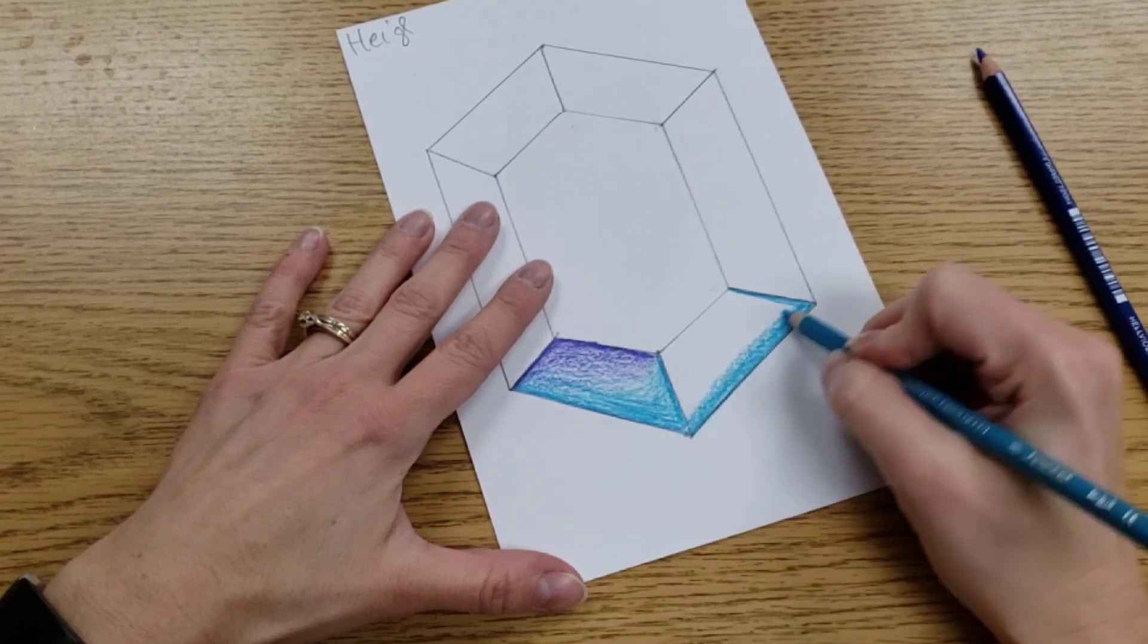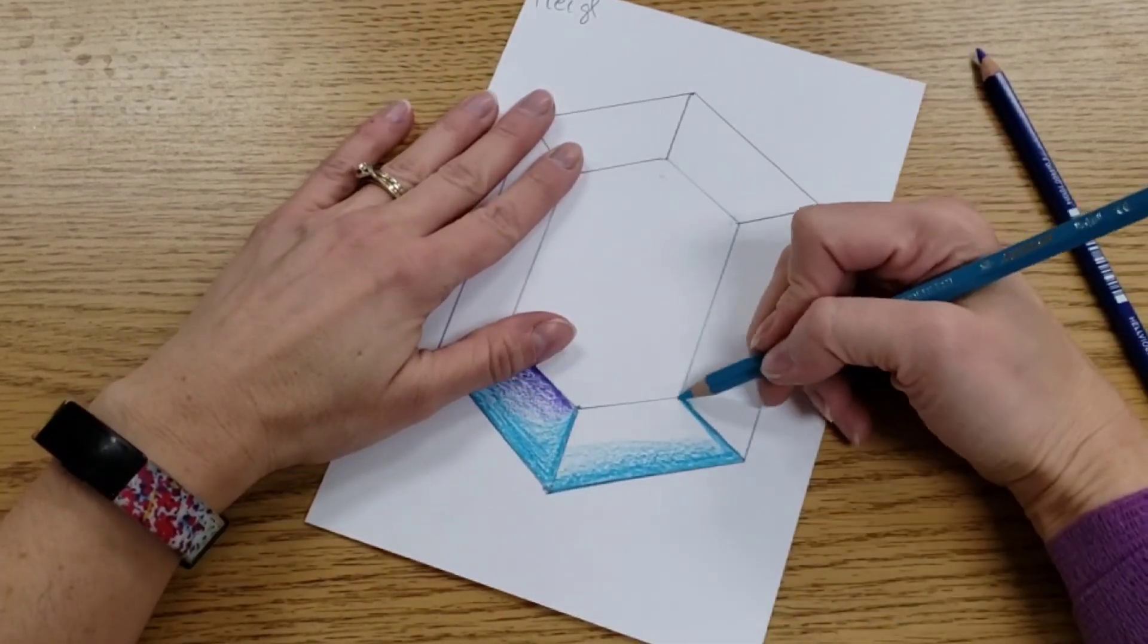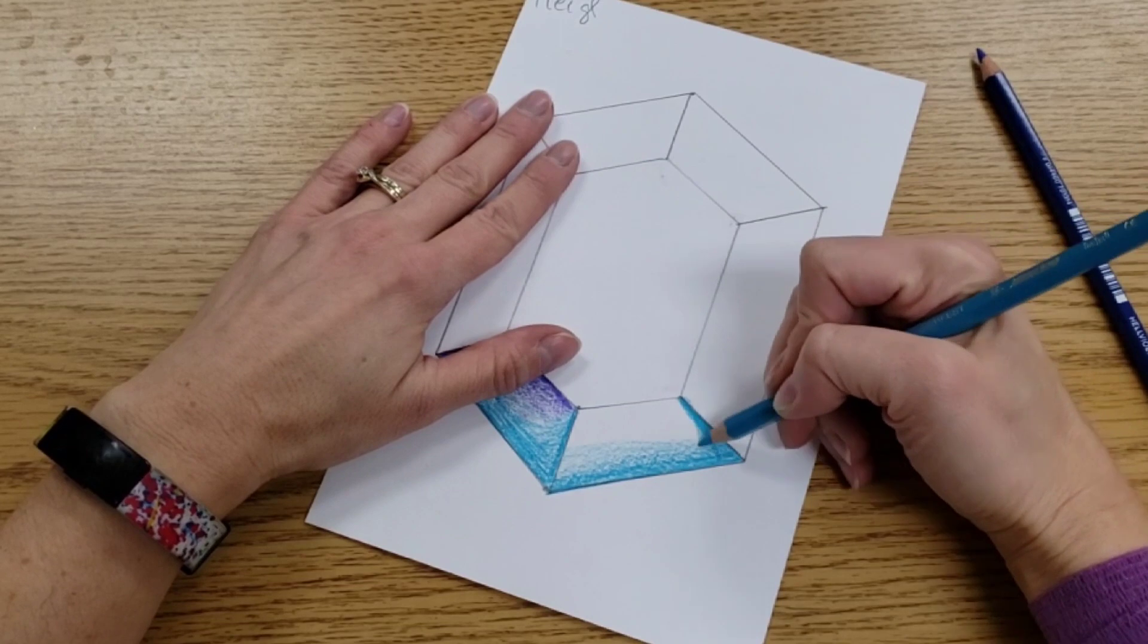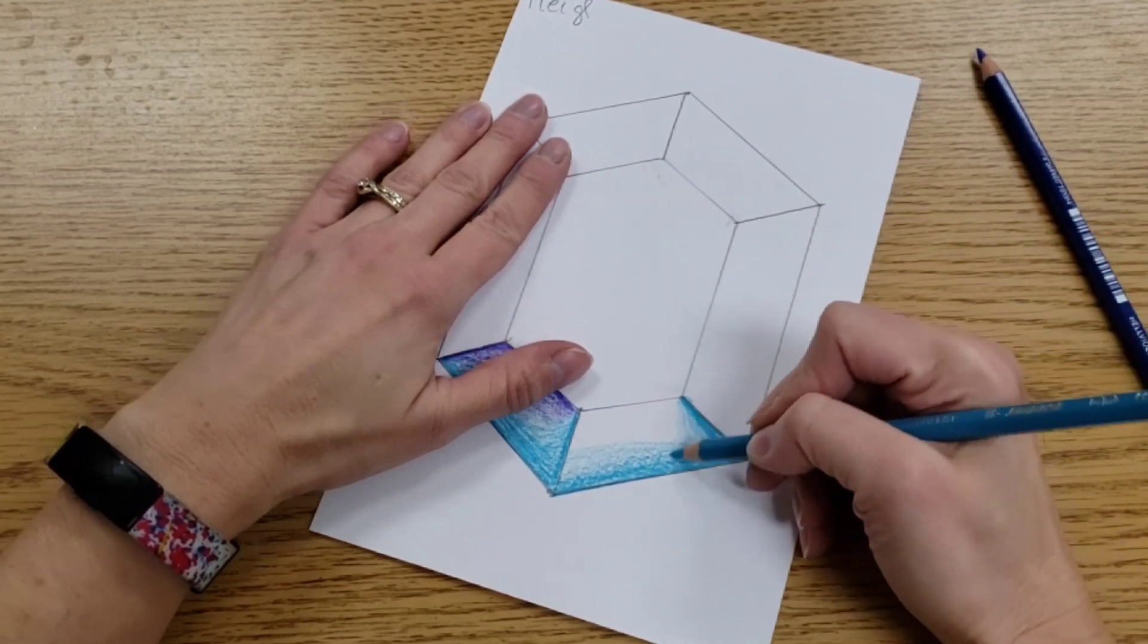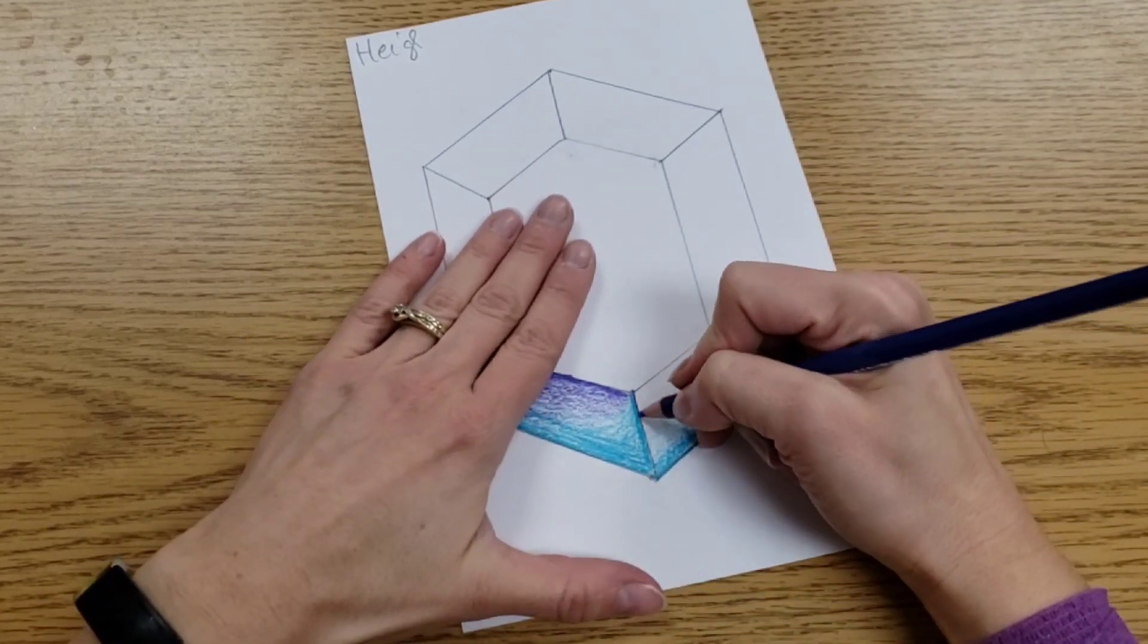And then I will slowly ease up pressure. Make sure you're going all the way to the line, don't stop short. And then same thing over here, dark, and then I'm trying to curve it a little bit and slowly ease up pressure. Then I can hit it with the other color.